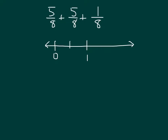So between 0 and 1 we get 2 parts, 4 parts, 5, 6, 7, and 8 parts — 1, 2, 3, 4, 5, 6, 7, and 8 parts between 0 and 1. The next whole number after 1 would be 2, and between 1 and 2 I'll also divide that section into 8 equal parts. Each of those parts is going to be worth 1 eighth.